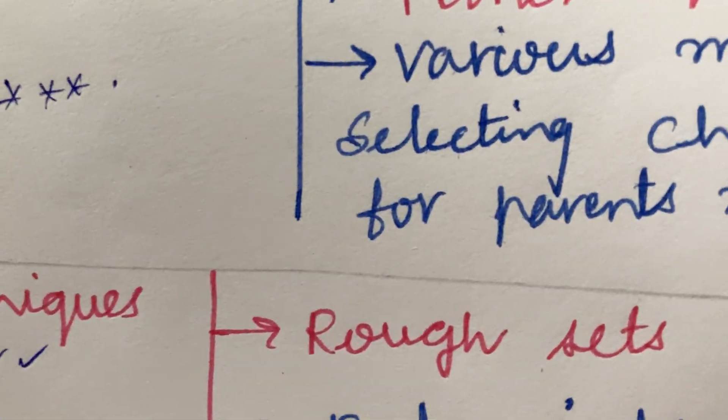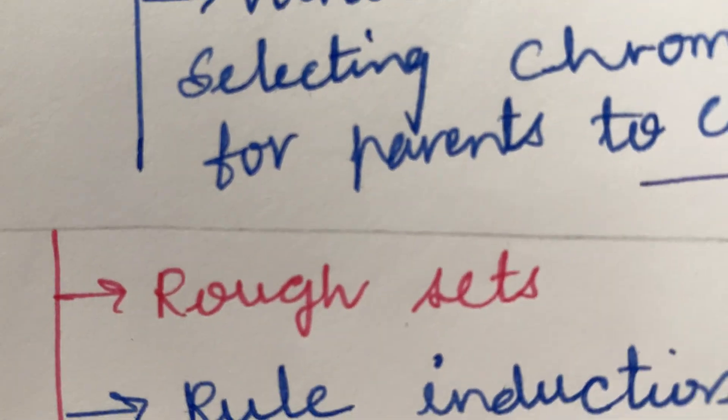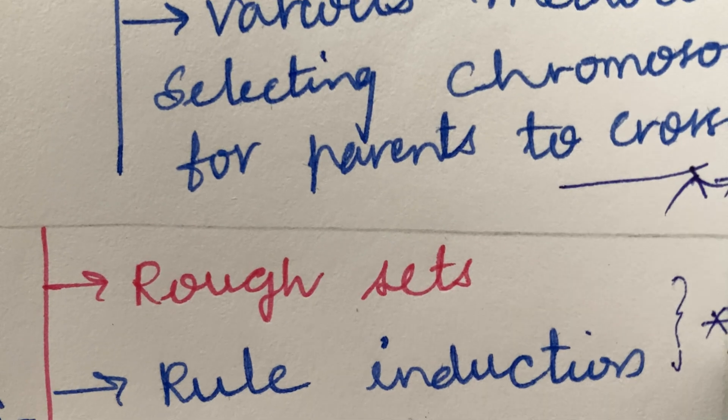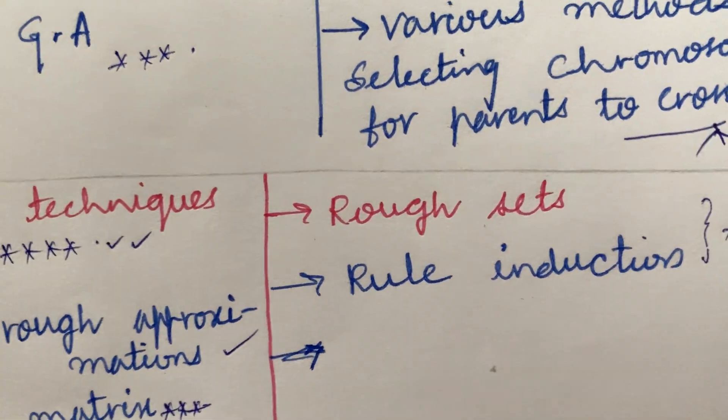Dear students, do not take it light. You can score good marks in this course. Rough sets as well as rule induction and the define the term may be a 3 mark and 2 mark question. As the course is too short in structure, you have enough time to work out.